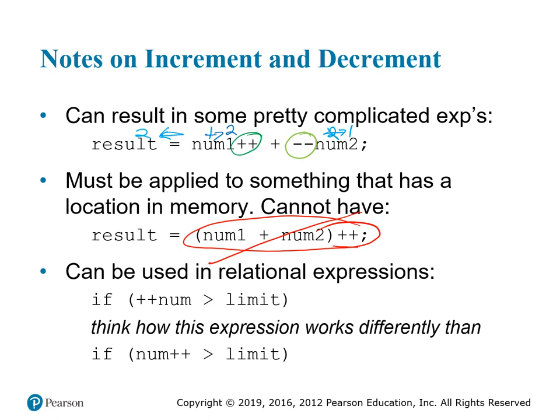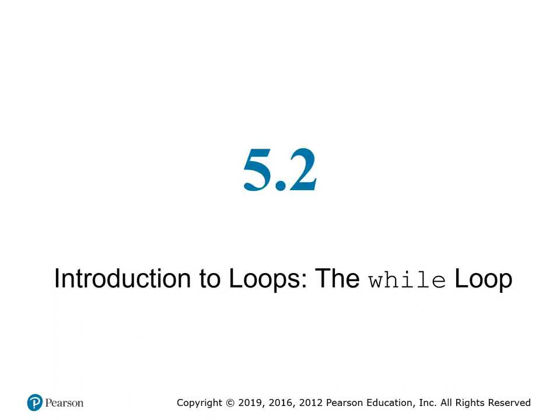The increment and decrement operators can be used in relational expressions. Consider ++num greater than limit versus num++ greater than limit. In the first case, we increment before comparing to limit. In the second case, we compare num and limit first, then increment the number afterward. Knowing about incrementing and decrementing is important bread-and-butter work for doing loops, since we often want to add or subtract one while going through a loop.